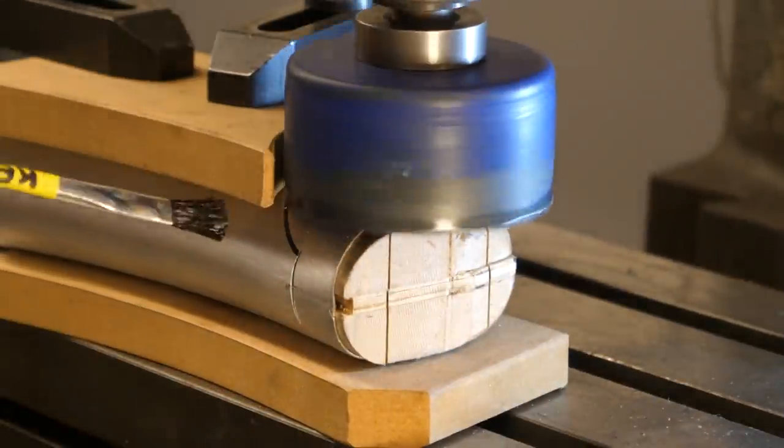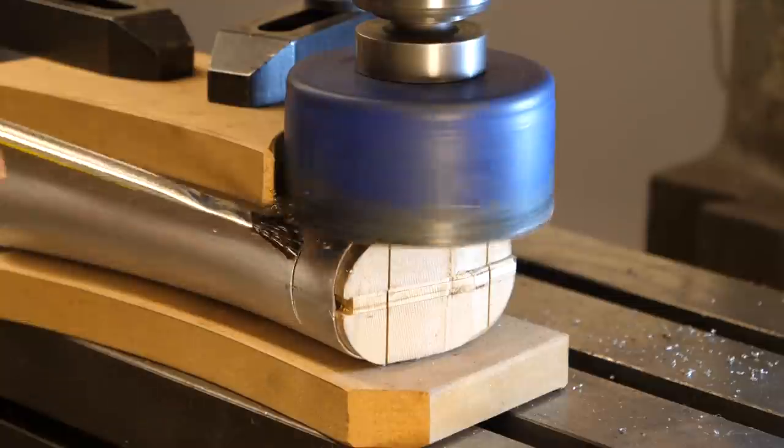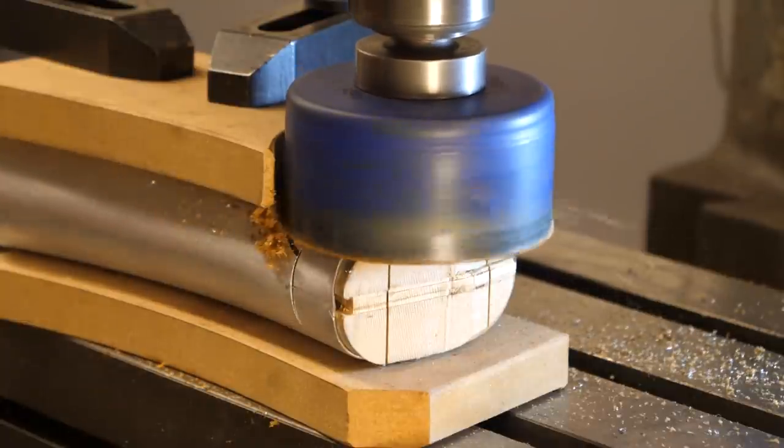Even though the hole saw has coarse teeth, it cuts the thin aluminum cleanly because of the tightly fitted slug.